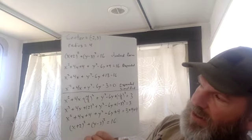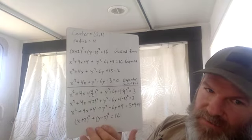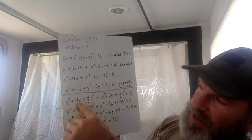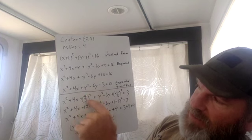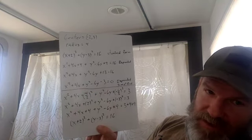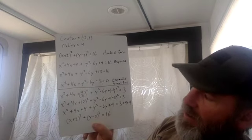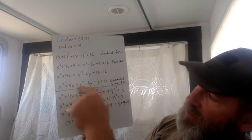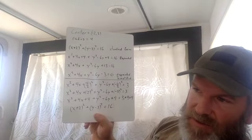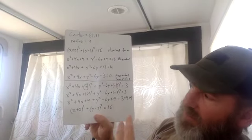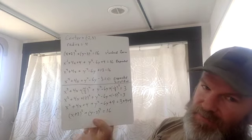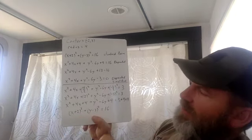To complete the square, the formula is to take half of your b term and square it. This is completing the square twice in one problem — you have to complete the square for your x's and for your y's, and they're separate. So do them separately.